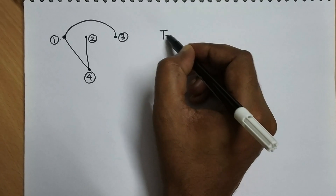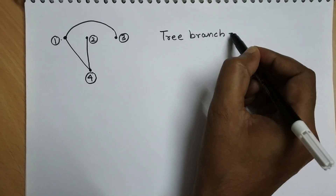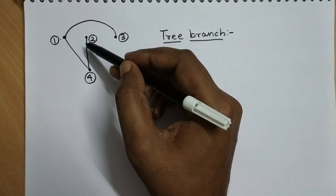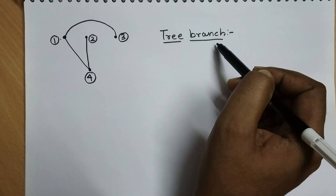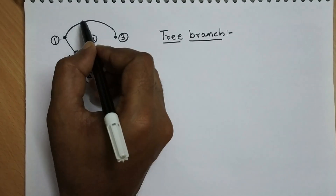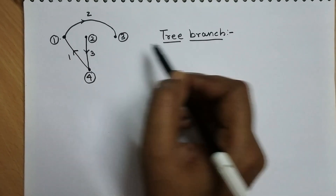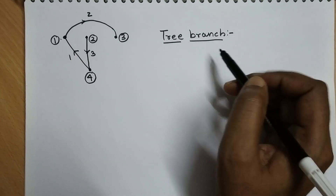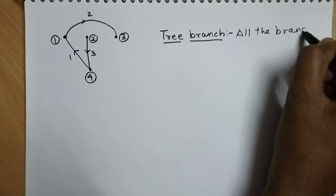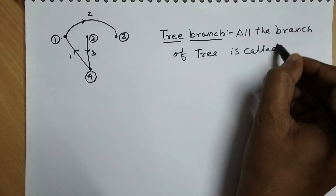Next comes tree branch. As the name says, for a given tree, all the branches are called tree branches. If we label branch number 1, branch number 2, and branch number 3, then these 3 branches are called tree branches. So all the branches of a tree are called tree branches.